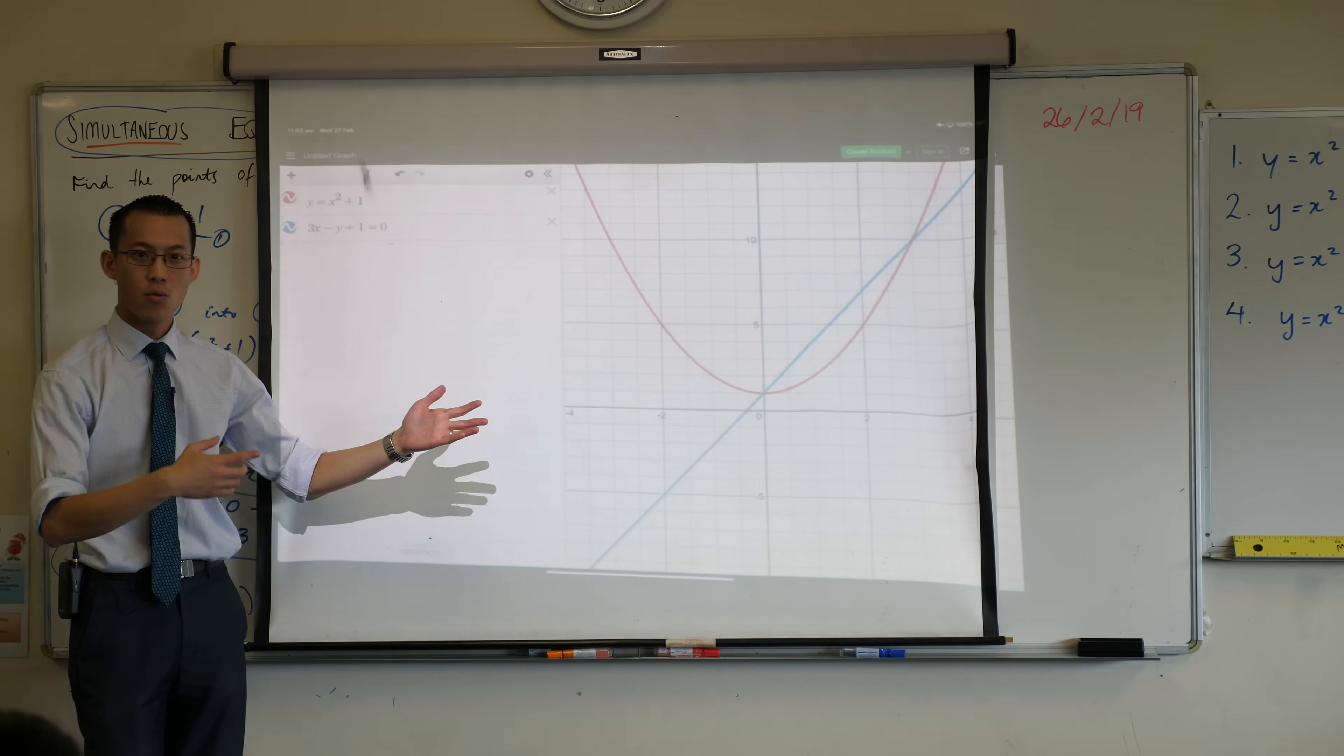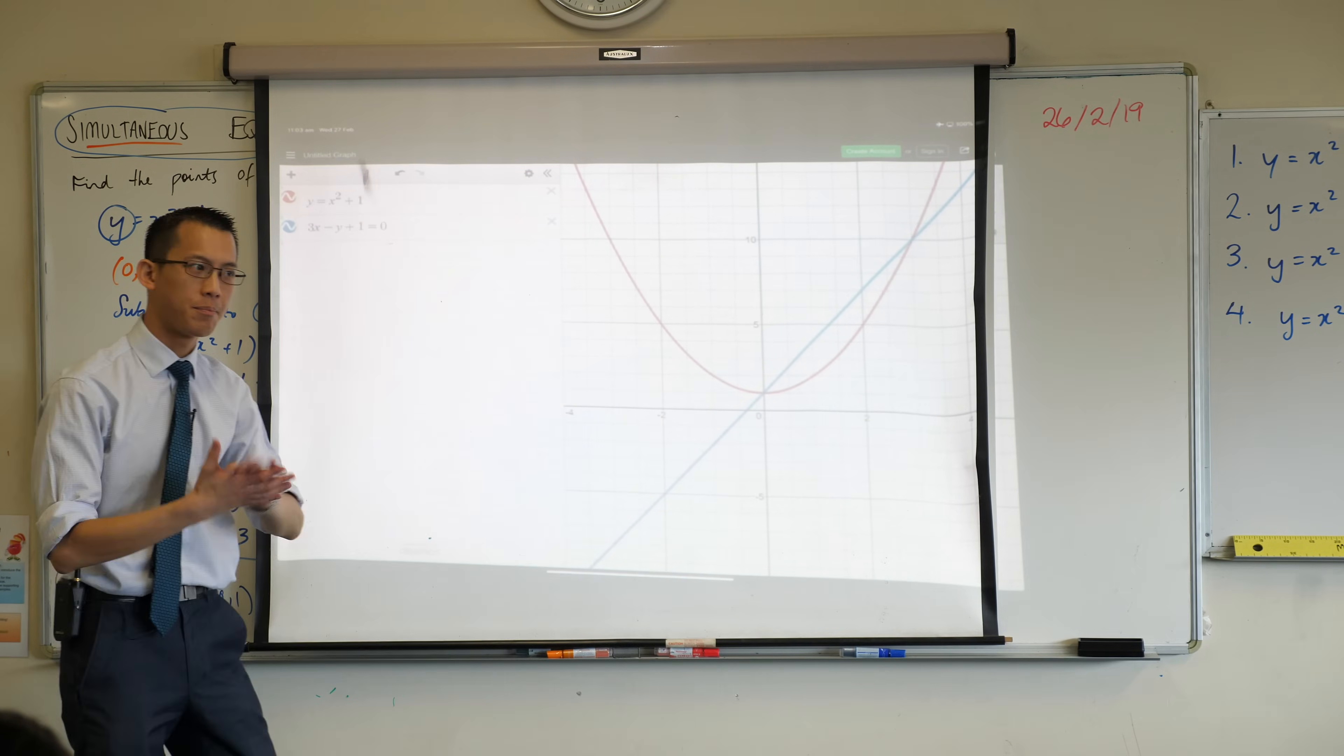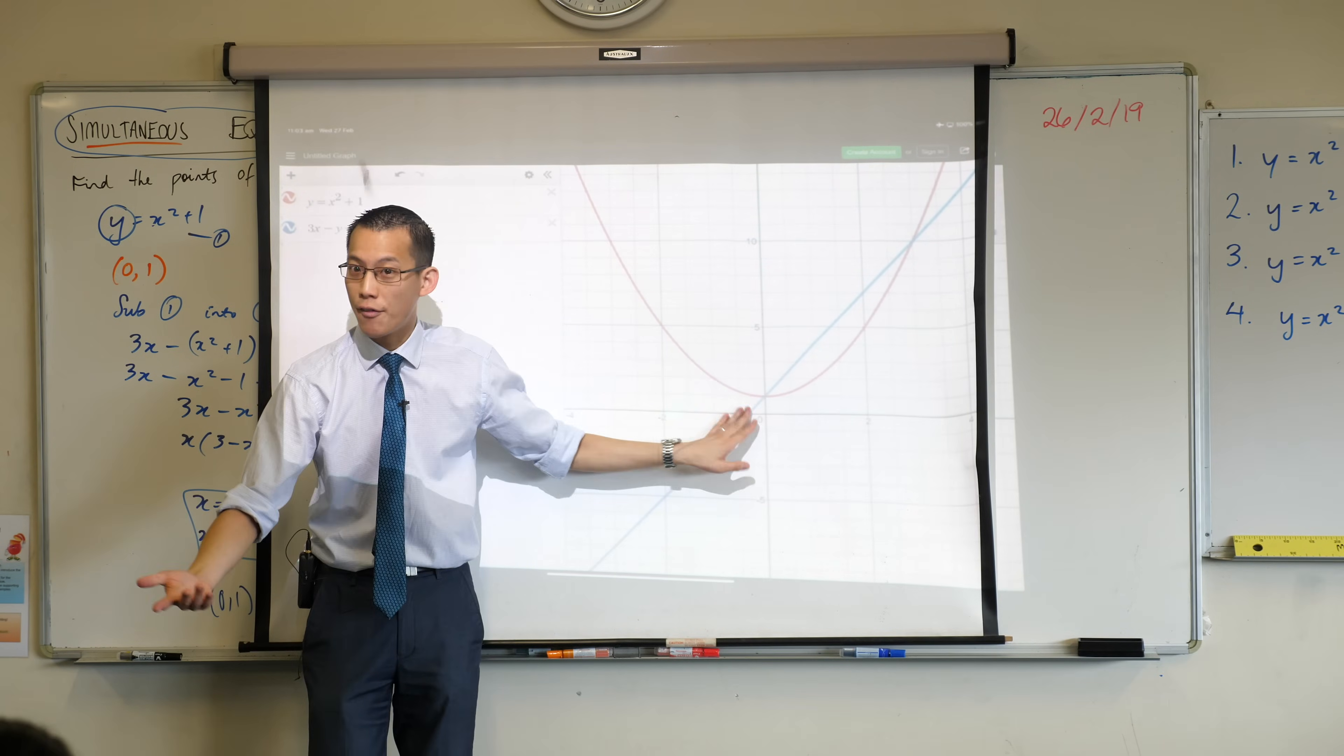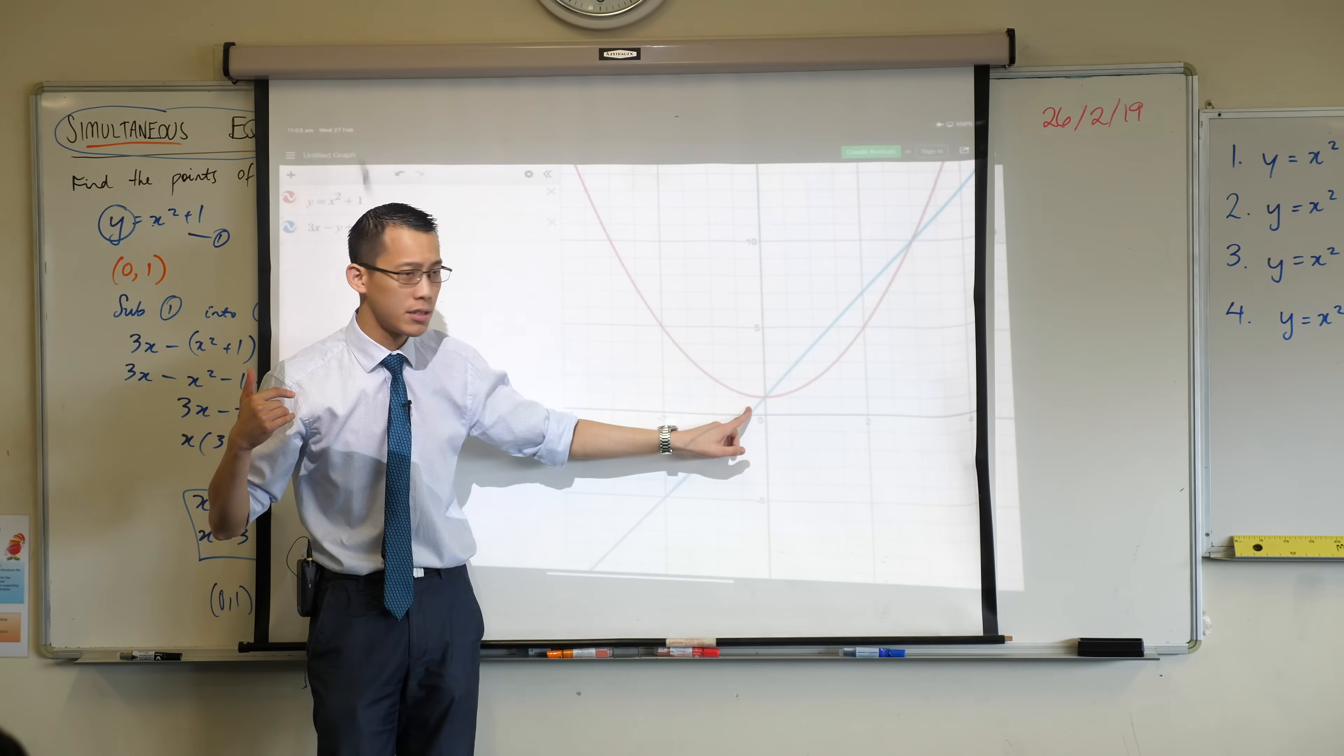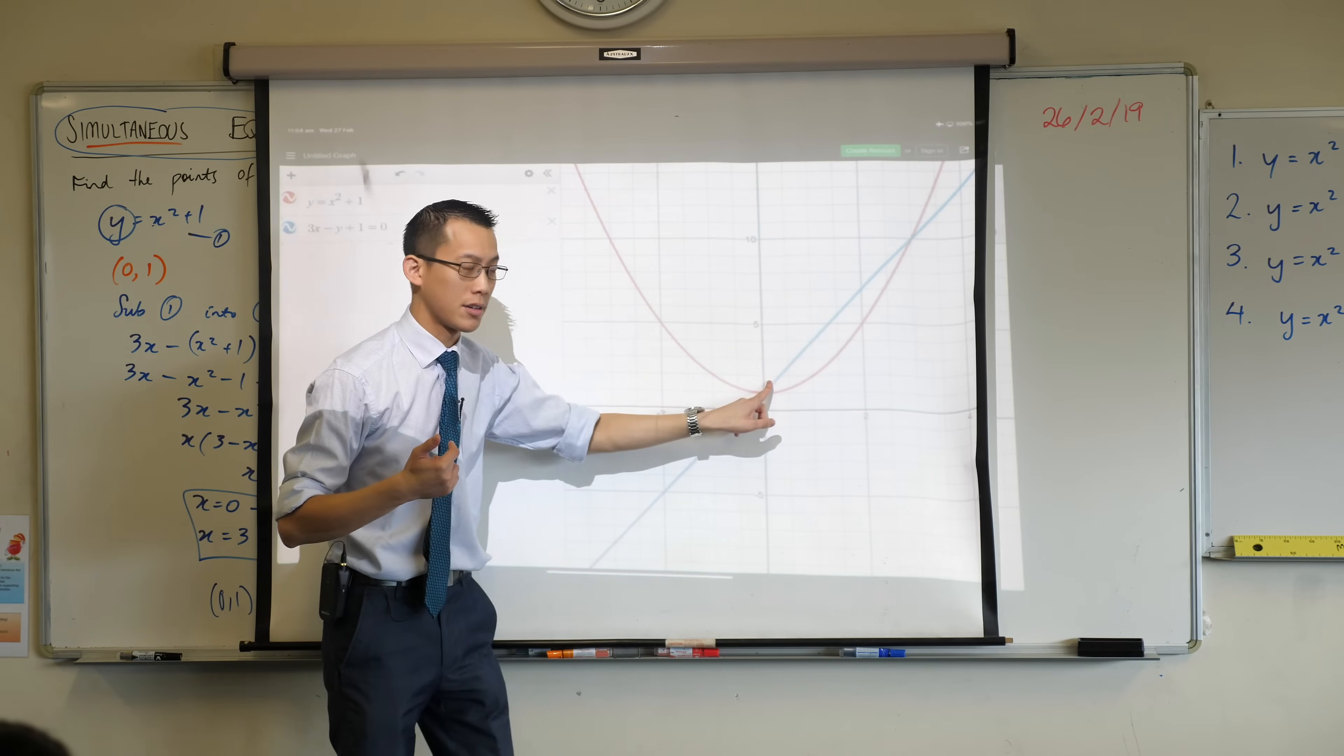Now, can you see what we found and its relevance to this equation, or to this picture, I should say? Where's 0,1? It's this first point of intersection. Do you agree? I've found that spot by solving the equation. Where's 3,10? Do you see where it is? It's the other spot over there. So, these are the two points that we've found.